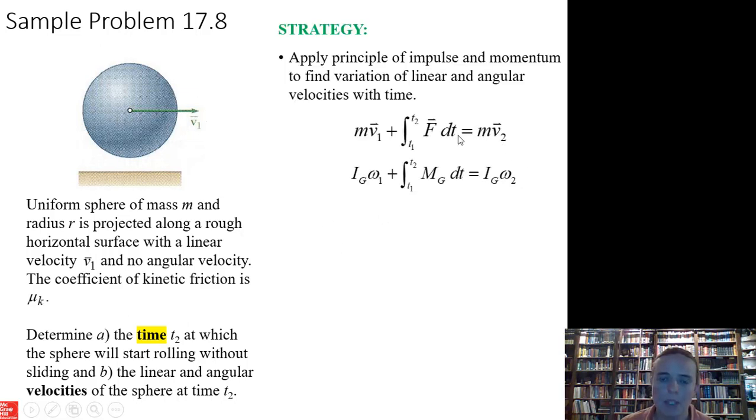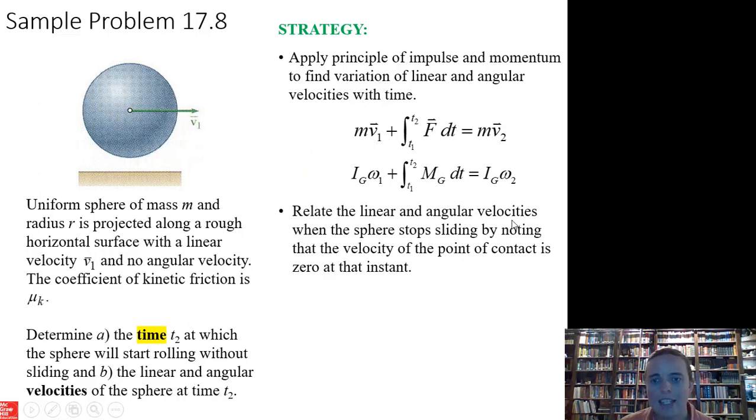We're dealing with time, so that means we have the linear and angular momentum balance equations. To relate these velocities to one another, v and ω are not related when it's sliding. But when it's not sliding, then v equals r ω. That's kinematics.